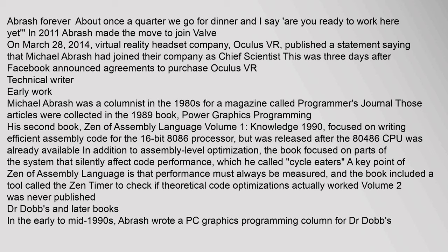Michael Abrash was a columnist in the 1980s for a magazine called Programmer's Journal. Those articles were collected in the 1989 book Power Graphics Programming. His second book, Zen of Assembly Language Volume 1: Knowledge (1990), focused on writing efficient assembly code for the 16-bit 8086 processor, but was released after the 80486 CPU was already available. In addition to assembly-level optimization, the book focused on parts of the system that silently affect code performance, which he called cycle eaters. A key point is that performance must always be measured, and the book included a tool called the Zen Timer to check if theoretical code optimizations actually worked. Volume 2 was never published.